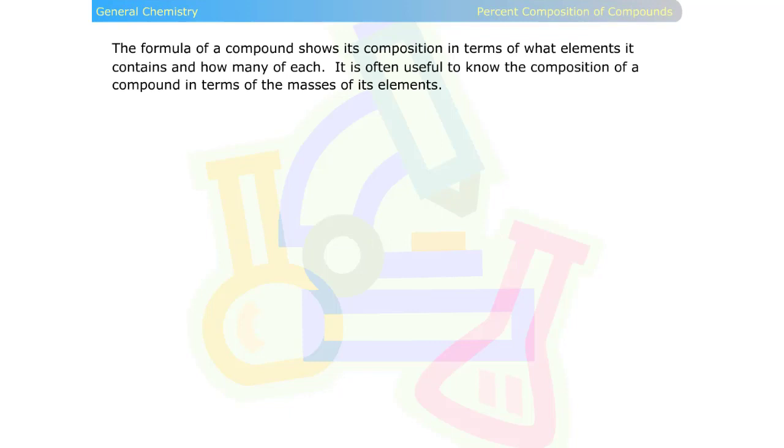The formula of a compound shows its composition in terms of what elements it contains and how many of each. It's often useful to know the composition of a compound in terms of the masses of its elements. For example,